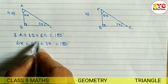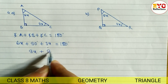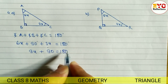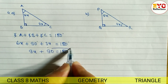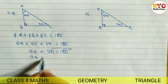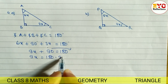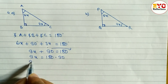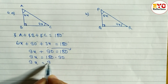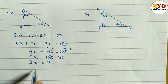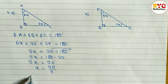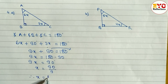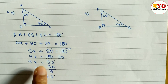So we write 9x plus 90 is equal to 180 degrees. 90 and 9x are unlike terms, so we take 90 to the right side. 9x is equal to 180 minus 90, which gives 9x equal to 90. This is in multiplication so we divide: X is equal to 90 divided by 9, therefore X is equal to 10 degrees. Hope you understand question 4A.